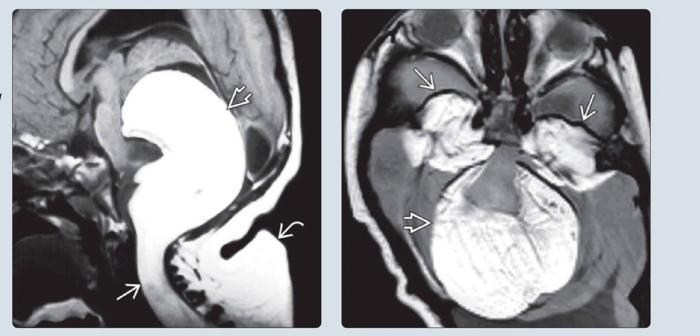On the right is the axial T1-weighted MRI in the same patient, showing how much the posterior fossa lipoma has increased in size compared to the baseline non-enhanced CT scan. The cerebellopontine angle lipomas extend into the Meckel's caves.